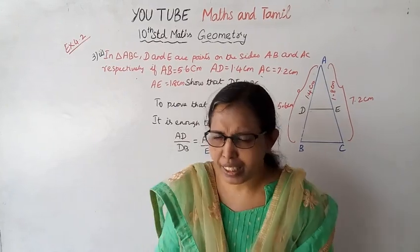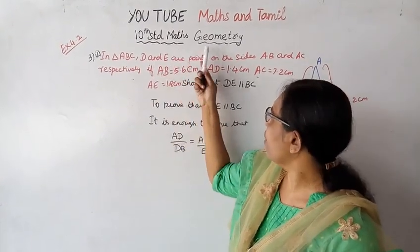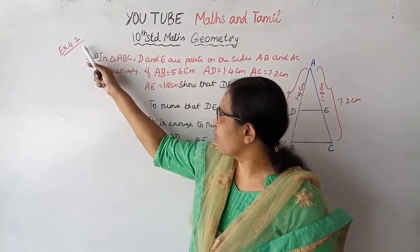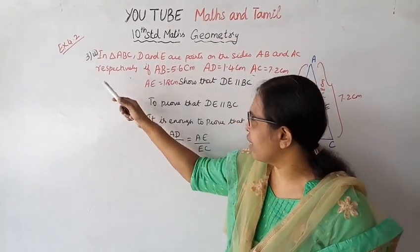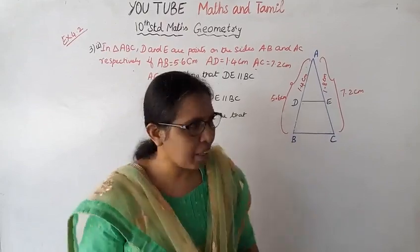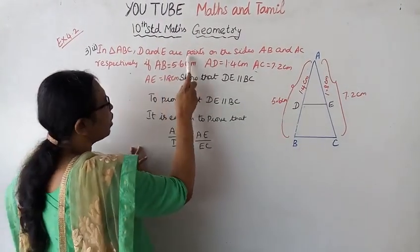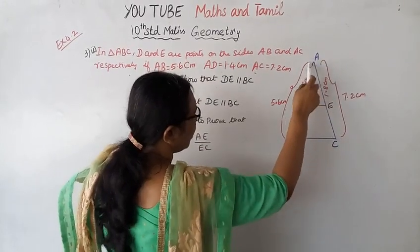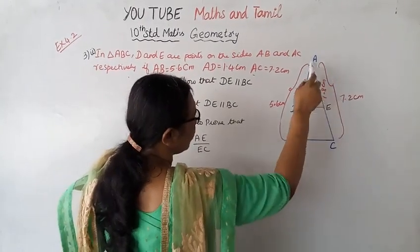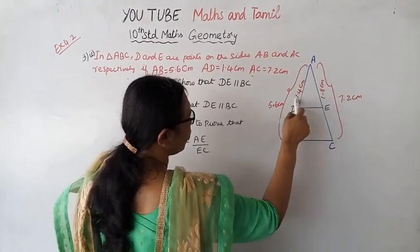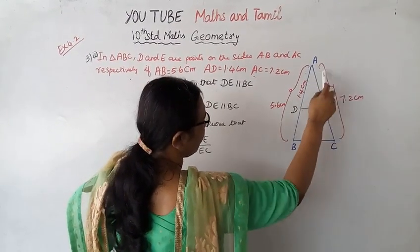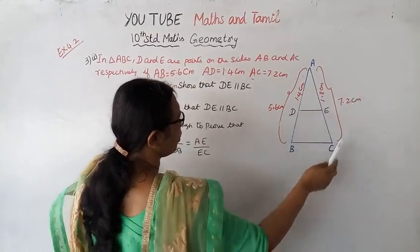Hello students, welcome to Maths and Tamil channel, 10th standard Maths geometry, important two marks question. Exercise 4.2, third problem, second subdivision. In triangle ABC, D and E are the points on the sides AB and AC respectively. If AD equals 1.4 cm, AB equals 5.6 cm, AE equals 1.8 cm, and AC equals 7.2 cm.